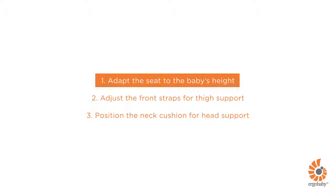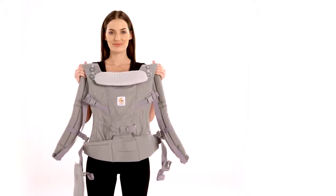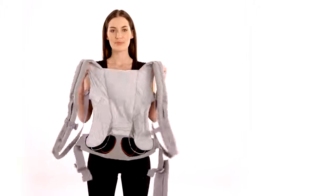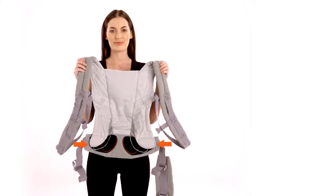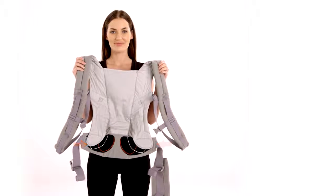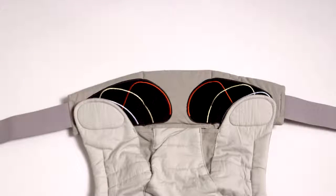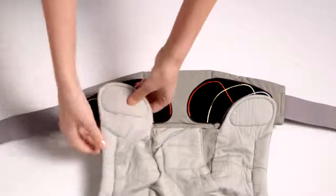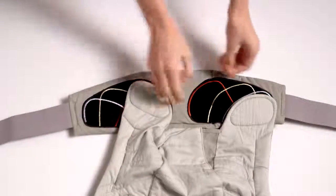First, adapt the seat to your baby's height. The carrier's bucket seat gradually adjusts to the size of your baby. Just follow the color-coded lines on the waist belt velcro. For a newborn, attach the tabs on the velcro following along the red lines.